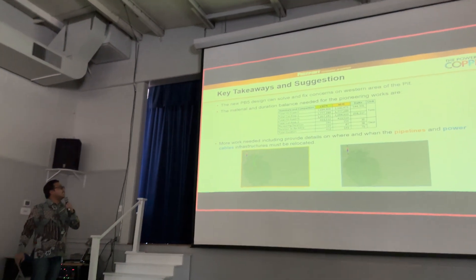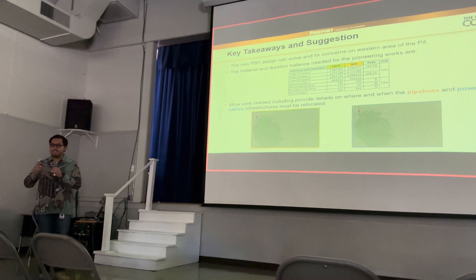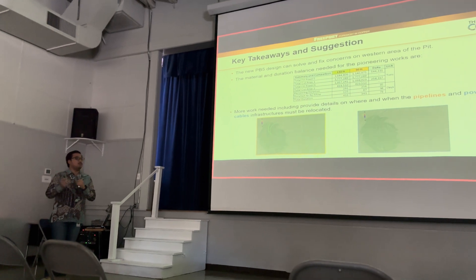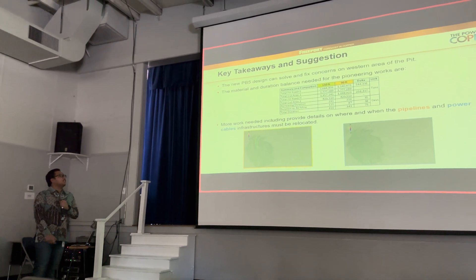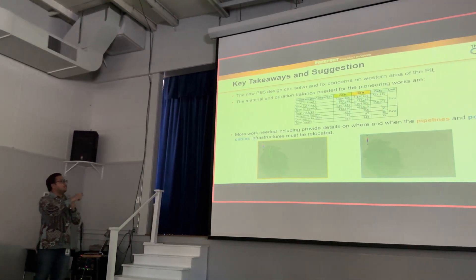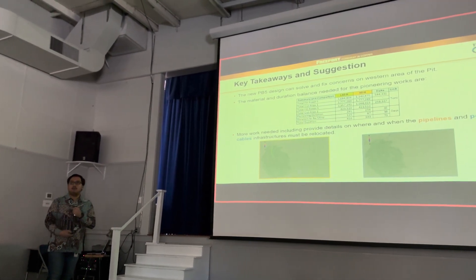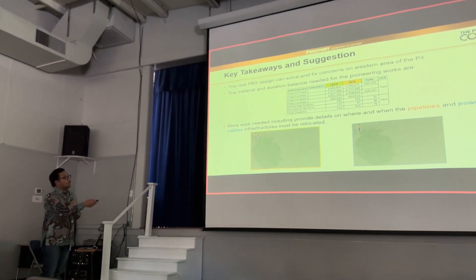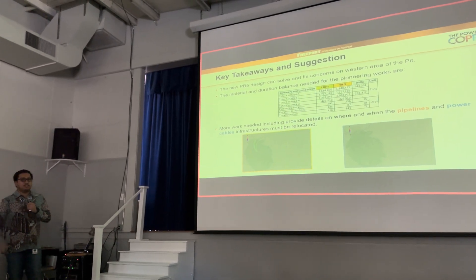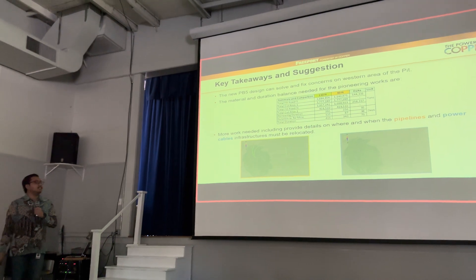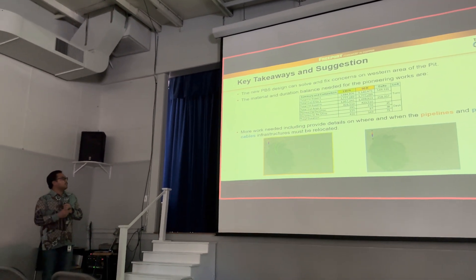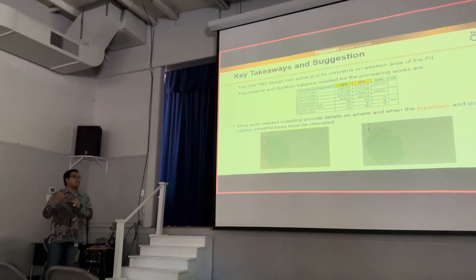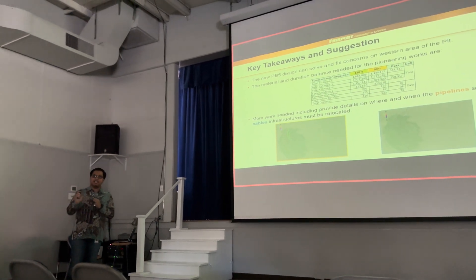Here are the key takeaways and suggestions from this project. First, we believe that the new PB5 design can solve the potential issues of the western part of the pit. Second, this table tells us how long the project is going to take — we need to spare approximately 156 days for the transition period between pushbacks. We also suggest that more work is still needed, including providing detail on where the pipeline and power infrastructure will need to relocate, because it will be affected by our pushback.